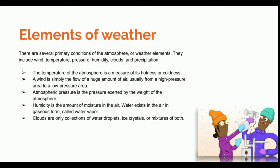There are several weather elements. Some main elements include wind, temperature, pressure, humidity, clouds, and precipitation. Now let's define these terms.